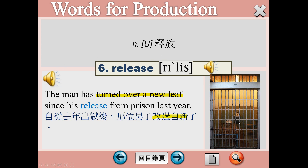Release當名詞的用法，釋放，請看例句：The man has turned over a new leaf since his release from prison last year. Since在這邊後面純粹就是一個介系詞，後面接一個名詞片語。我們剛剛遇到since就有提過，它前面搭配的是現在完成式，所以你看到的是has turned。Turn over a new leaf字面上就是說轉換成一朵新葉，真正的中文意思就是改過自新，同學可以把這個成語用法背起來。